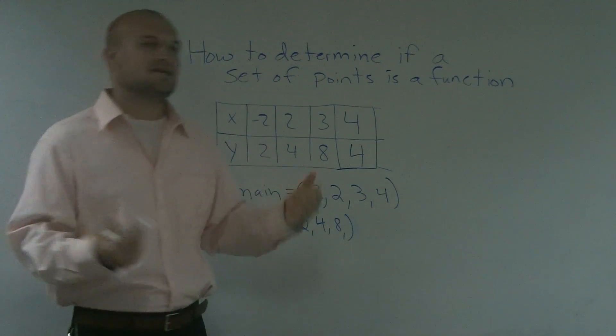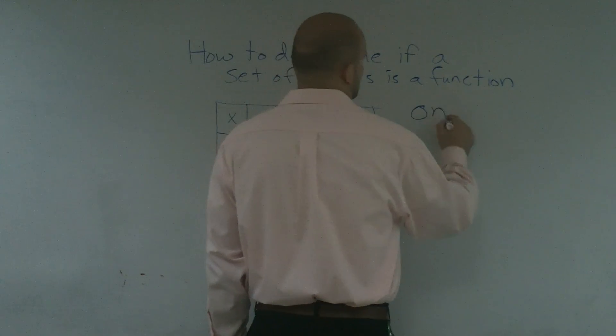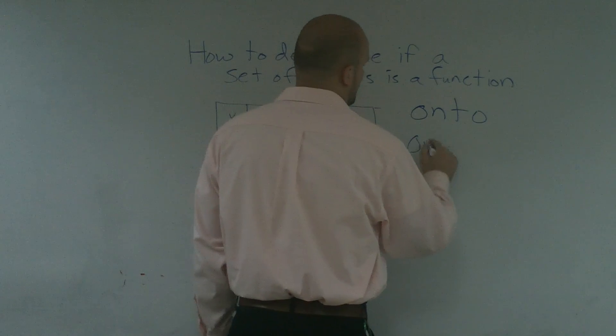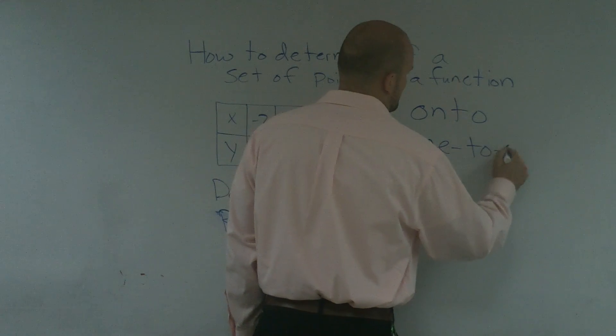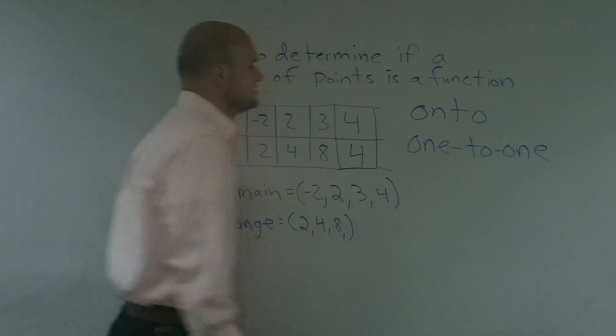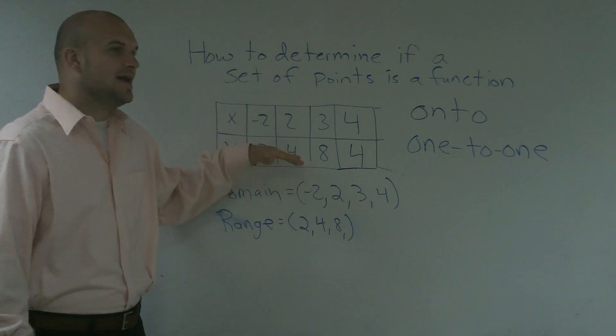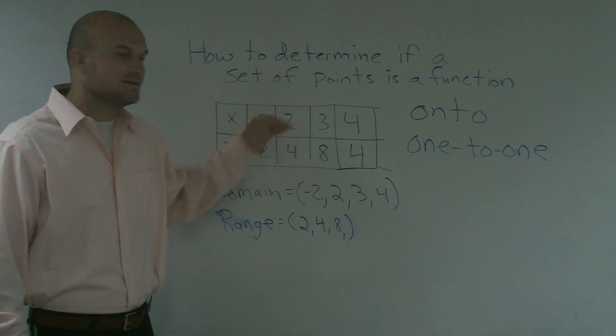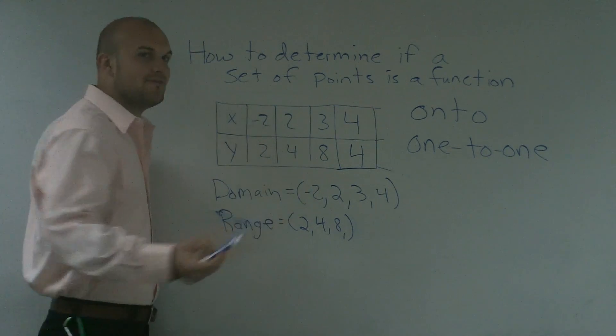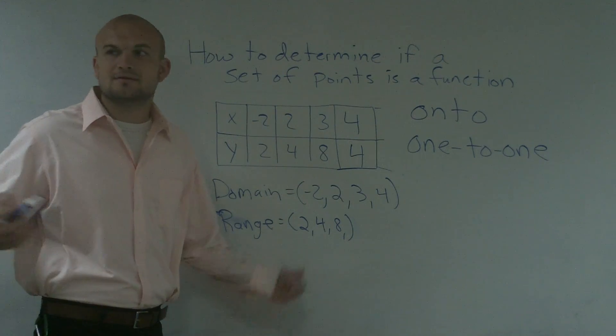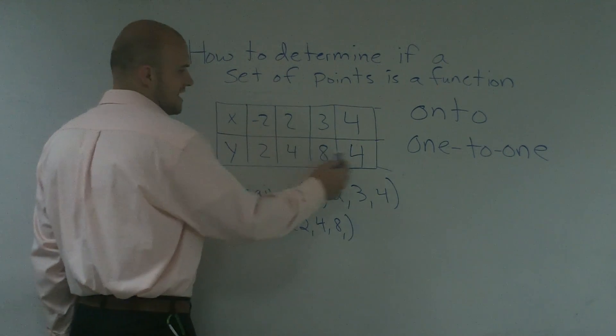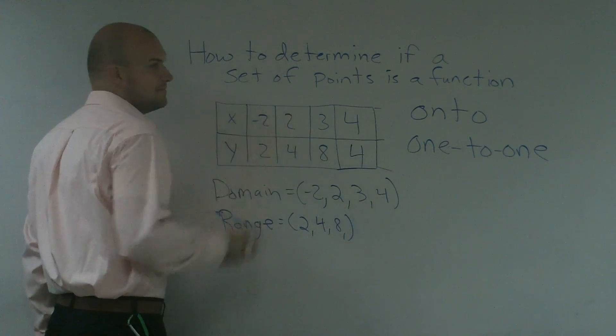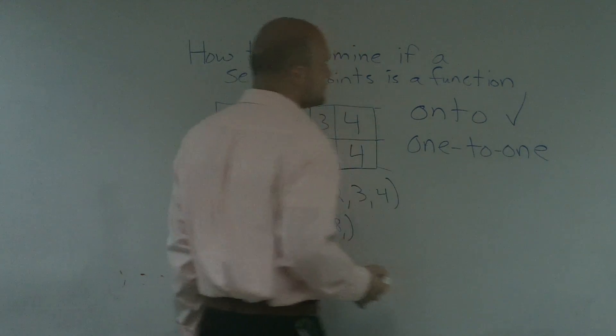Then the next step is when you look at it, is it going to be onto or one-to-one? First thing, onto. What that means is everything in the range has a map to the domain. When you have a set of coordinate points, it's pretty easy to see if it's onto or not. We notice that every element in our range maps to something in the domain, so therefore it is onto.